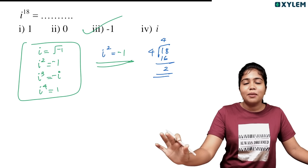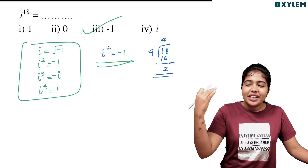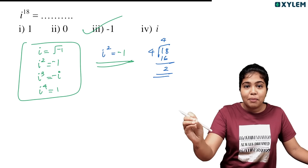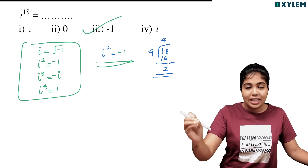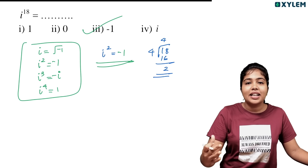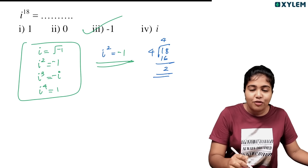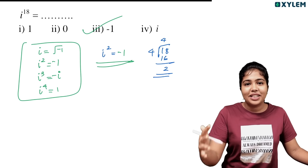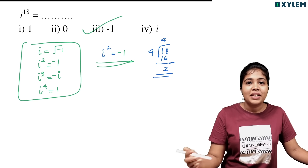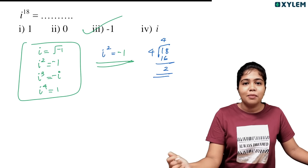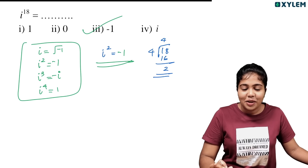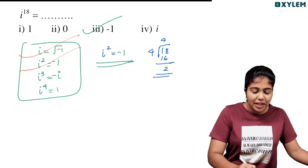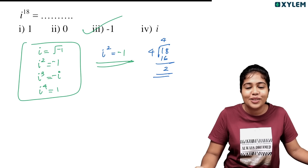So I can see these 4 values. For i raised to any power, how do we find the answer? Take the power, divide by 4, and look at the remainder. The remainder can be 0, 1, 2, or 3. Based on the remainder, look up the corresponding value in the table. If you have any remainder, you do the division. If the value is in this table, no further question is needed.